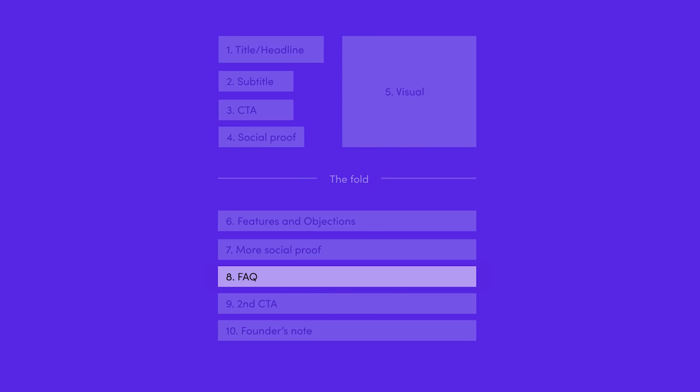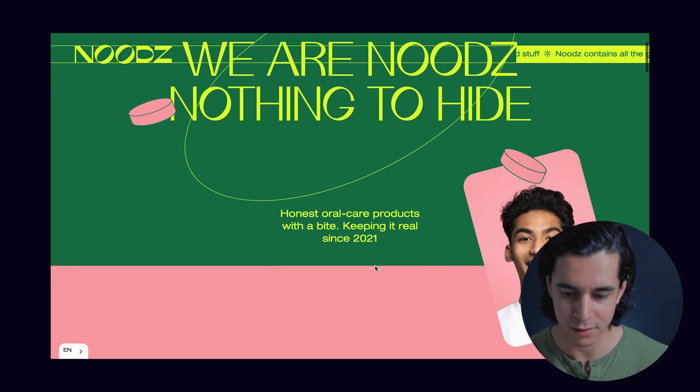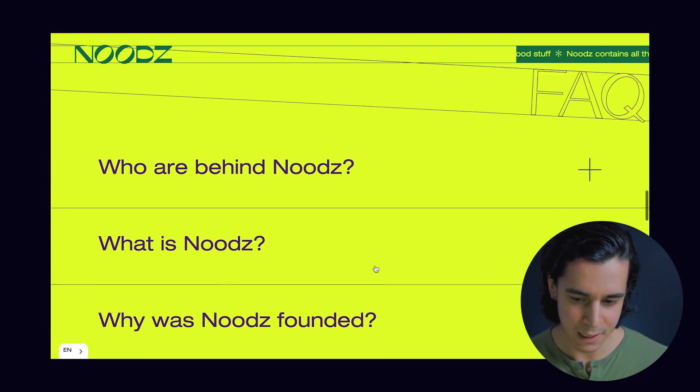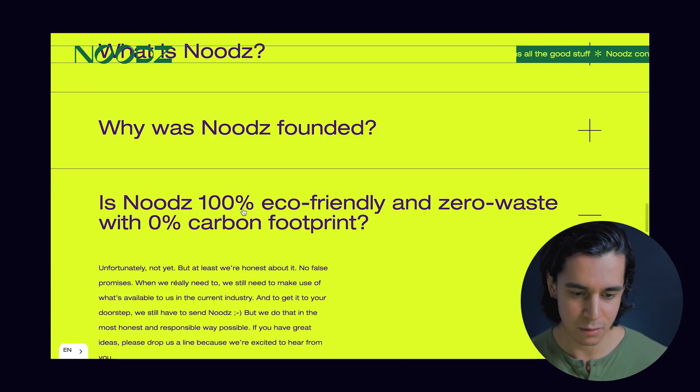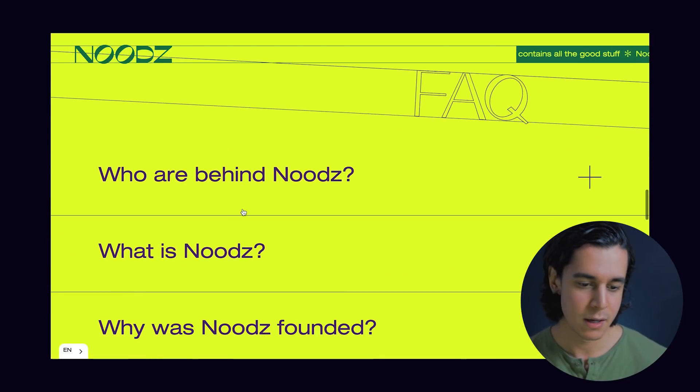After your below-the-fold social proof, you have your FAQ — frequently asked questions. Your FAQ is where you include any objection handling that you weren't able to fit in the features and benefits section. Whatever you weren't able to address there, you dedicate to a frequently asked questions section. A good example is the wearenudes.com website — a Webflow site with beautiful interactions. Scroll down and you've got the FAQ. Keep it simple, use accordions. Every objection you weren't able to address earlier, add to this frequently asked questions section.